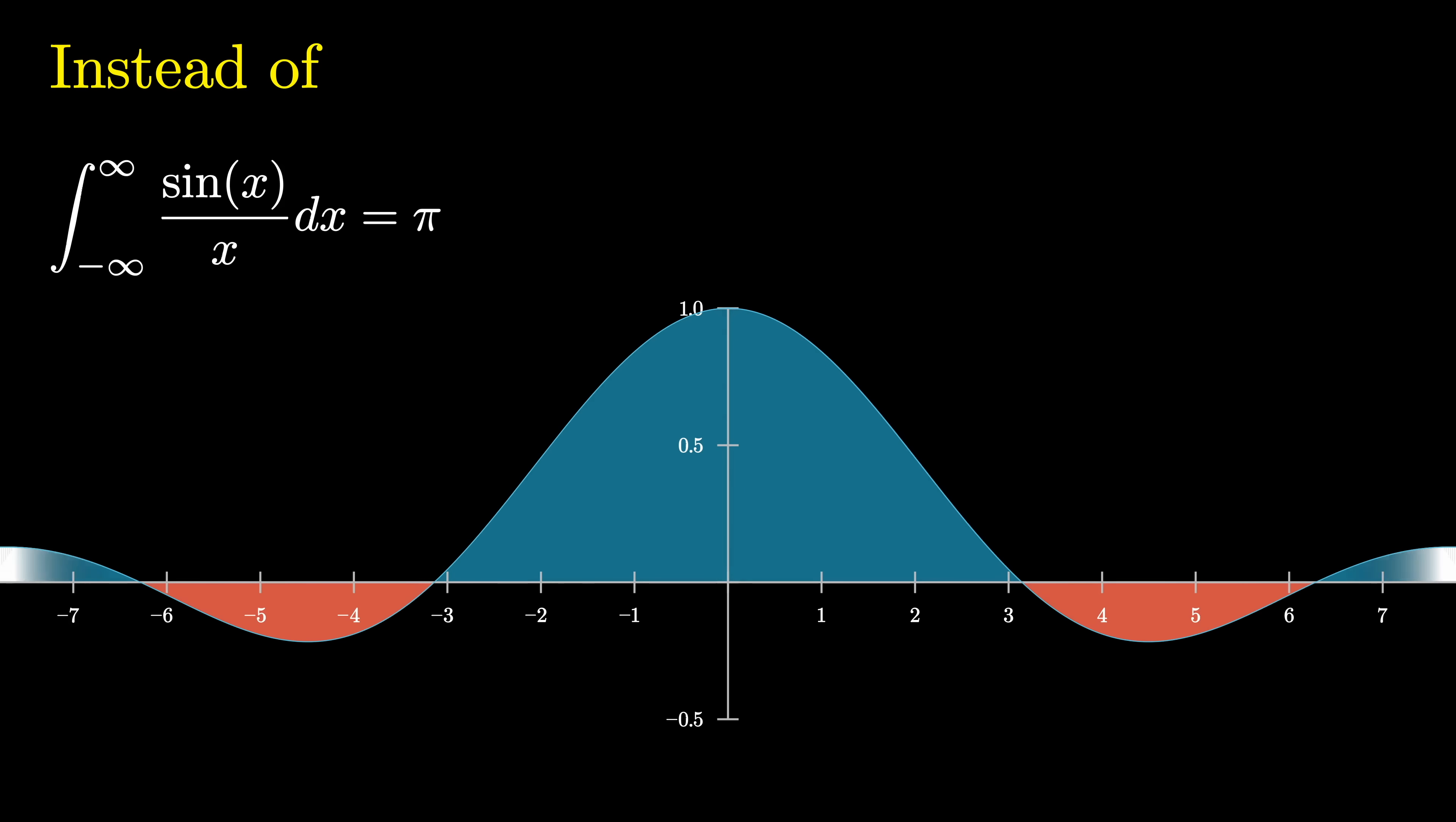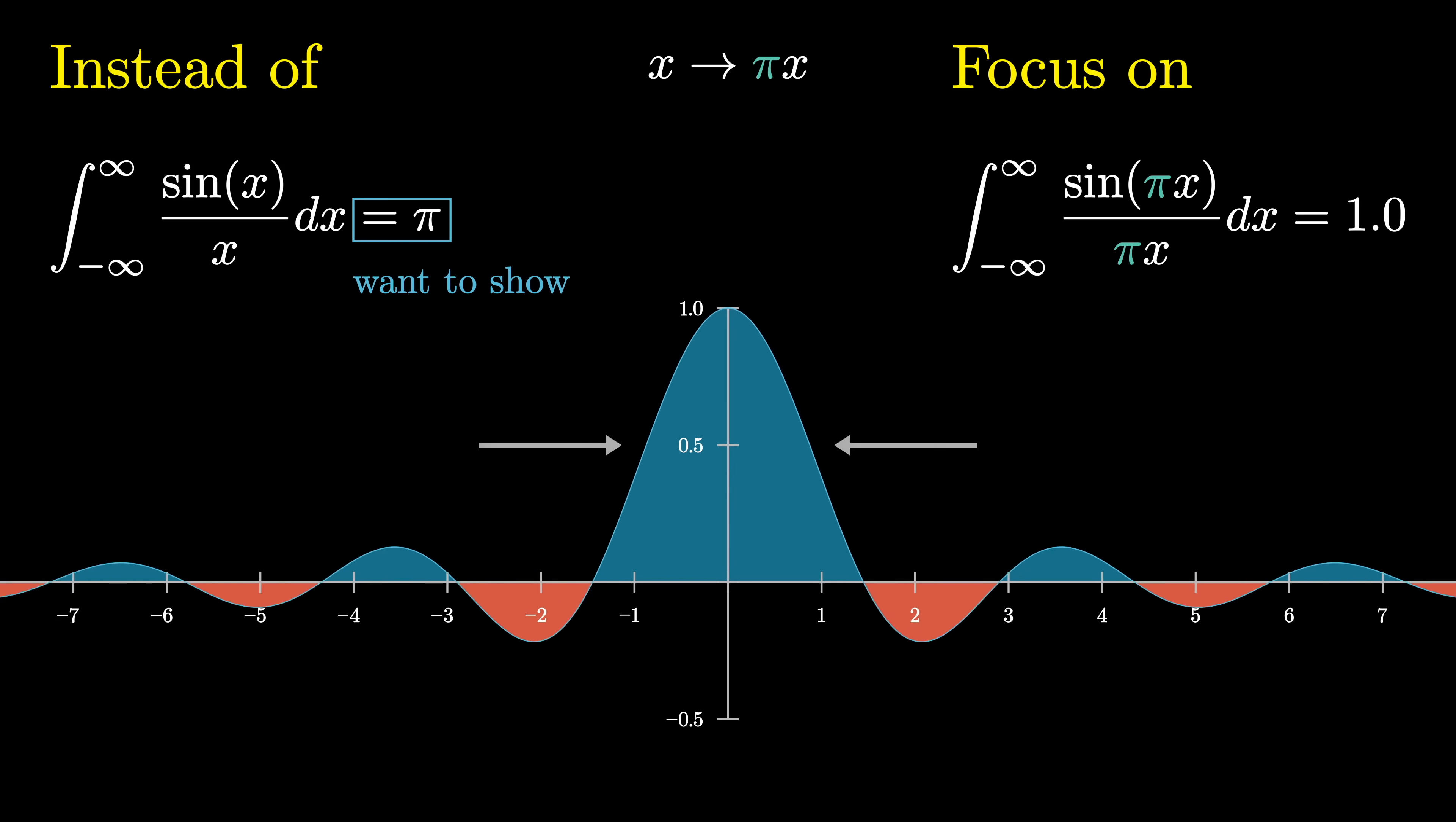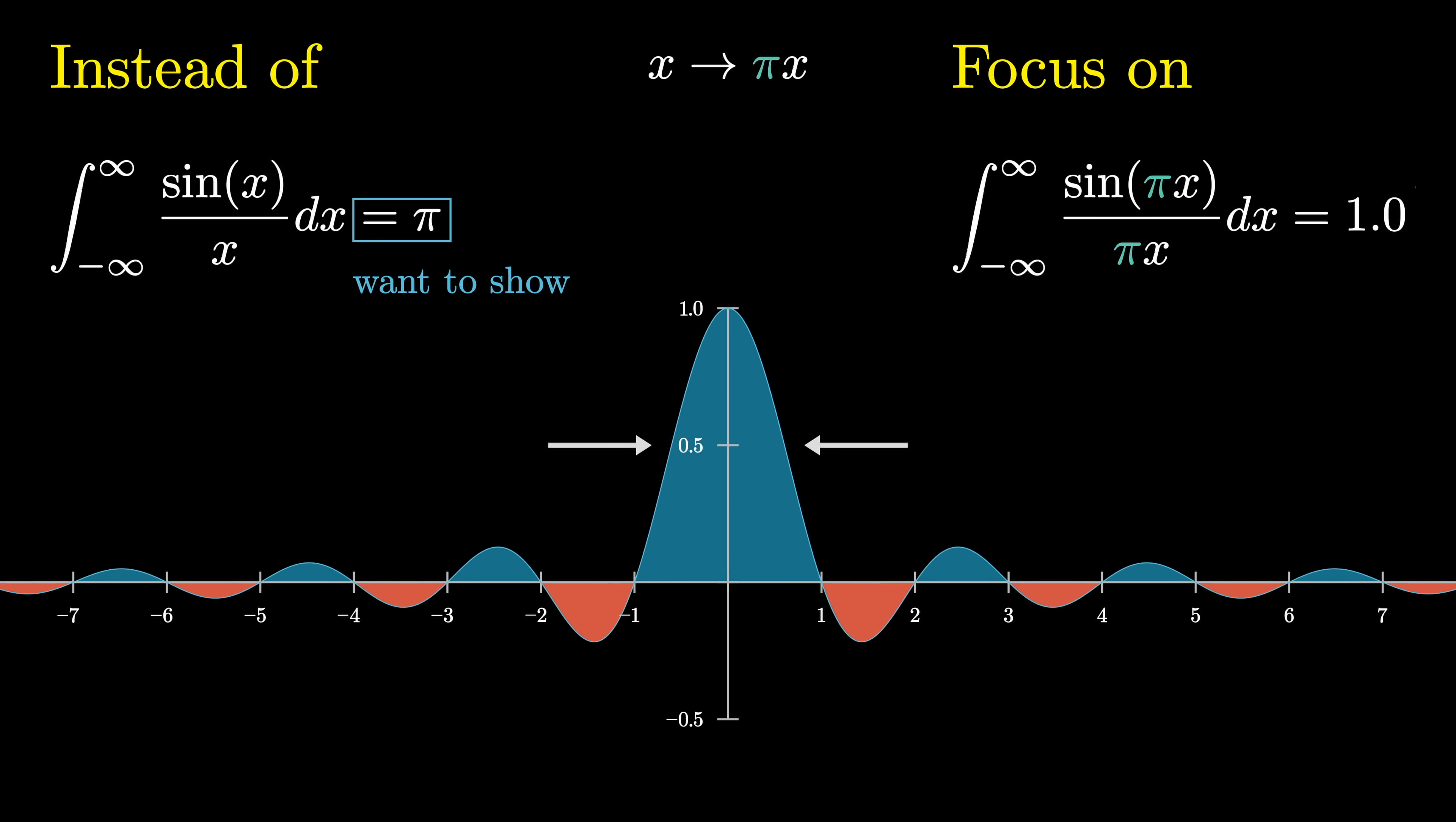To start, instead of focusing on this function sine of x divided by x, where we want to show why the signed area underneath its curve is equal to pi, we'll make a simple substitution where we replace the input x with pi times x, which has the effect of squishing the graph horizontally by a factor of pi, and so the area gets scaled down by a factor of pi, meaning our new goal is to show why this integral on the right is equal to exactly one.